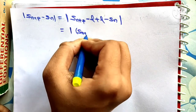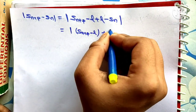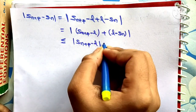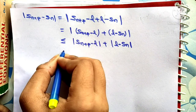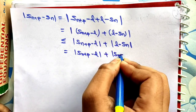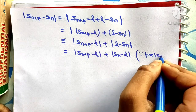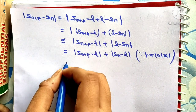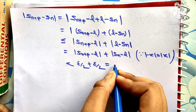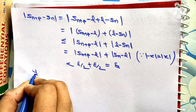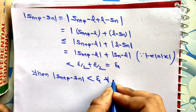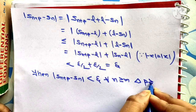We separate: |Sn+p − Sn| = |Sn+p − L + L − Sn| ≤ |Sn+p − L| + |L − Sn| = |Sn+p − L| + |Sn − L|, since |−x| = |x|. Each term is less than epsilon/2, so after adding we get |Sn+p − Sn| < epsilon for all n ≥ m and p ≥ 1.